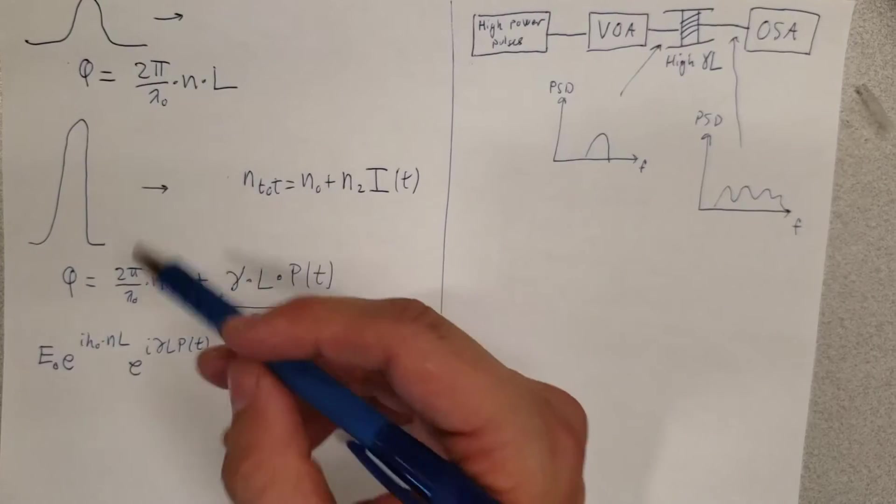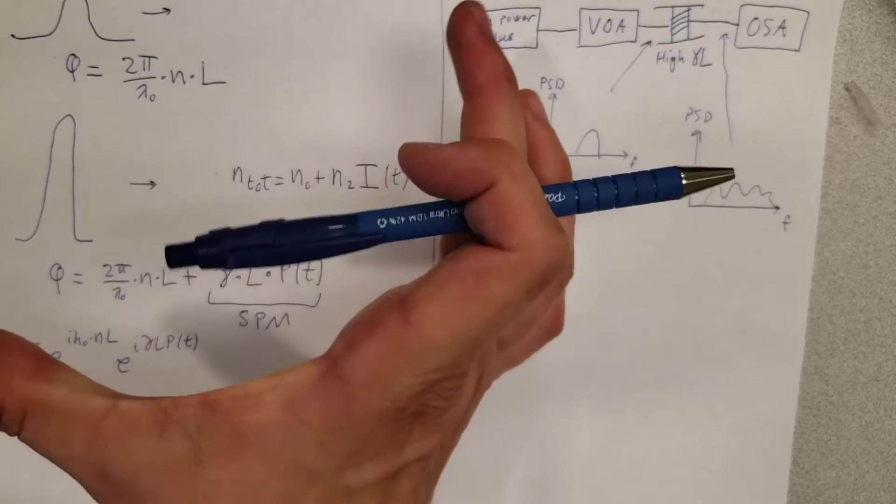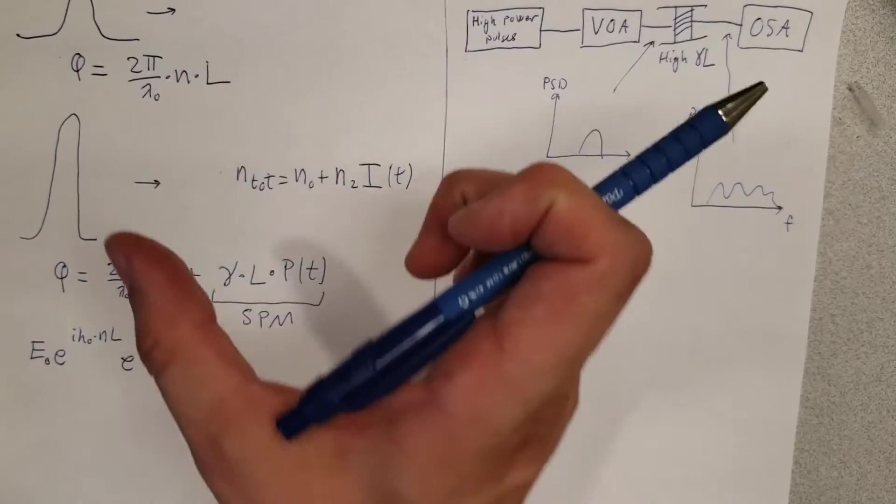That's why we can take a very narrow pulse in the time domain which has a certain spectral width, and that's going to be broadened out to potentially span all the way into the visible range.